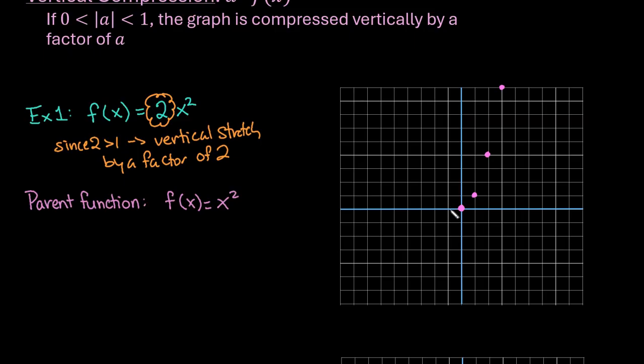On the negative side, you would have the same thing. If I square -1, -1 × -1 is positive 1. -2² would give me positive 4. And then -3² would be 9. And so basically everything else would be off the screen. So this is our parent function that we are starting with.